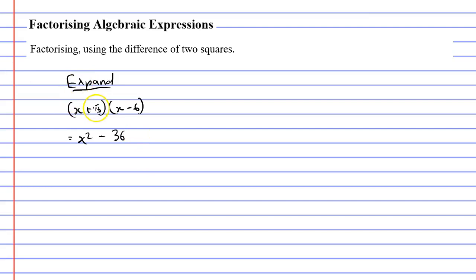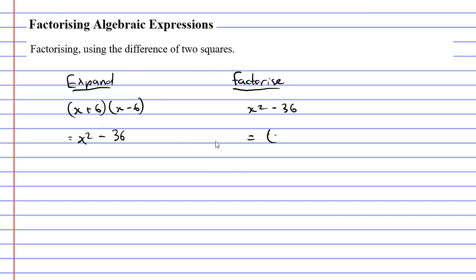So if that is what expanding looks like, what does factorizing look like? If we are asked to factorize x² - 36, factorizing is the opposite of expanding. So x² - 36 is the result we get when we expand, and factorizing goes in reverse — we get a result of (x + 6)(x - 6) when we factorize x² - 36.